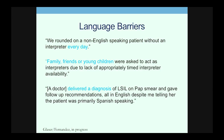Here are the data for minority patients — around 70% for Latinos and African Americans, slightly smaller for Asians and Middle Easterns. What are the students saying when they say they saw health care disparities? Under language barriers, a student said: 'We rounded on non-English-speaking patients without an interpreter every day.' Another said families, friends, or young children were asked to act as interpreters due to lack of appropriately timed interpreter availability. The first two are bad practice; the last one is against the law. A doctor delivered a diagnosis of pre-cancer on a pap smear and gave follow-up recommendations all in English, despite being told the patient was primarily Spanish-speaking.